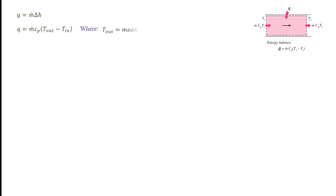From the first law of thermodynamics for a control volume, assuming no work, no changes in kinetic and potential energy, and steady state conditions, we can get an expression for the heat transfer rate in terms of the mass flow rate and the change in enthalpy. For an incompressible substance with constant specific heats, we can put delta H in terms of delta T, where delta T is the change in temperature from the inlet to the outlet. In other words, Q is a function of the change in mean temperature.